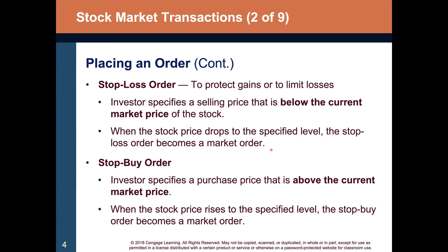Next is a stop buy order, where investors specify a purchase price that is above the current market price. This can be useful in specific scenarios. When the stock price rises to the specified level, the stop buy order becomes a market order. So the stop loss is a sell order triggered when price drops to a level, and the stop buy is a buy order triggered when price rises to a level.